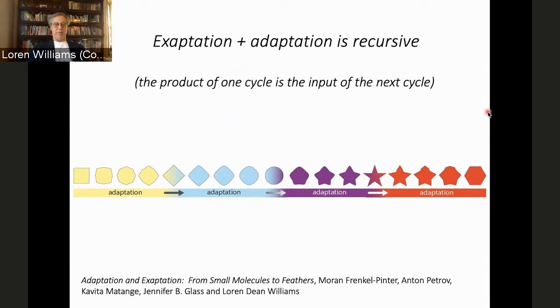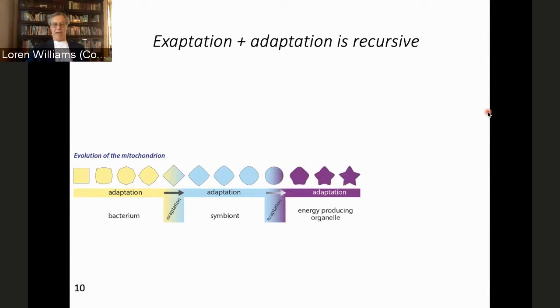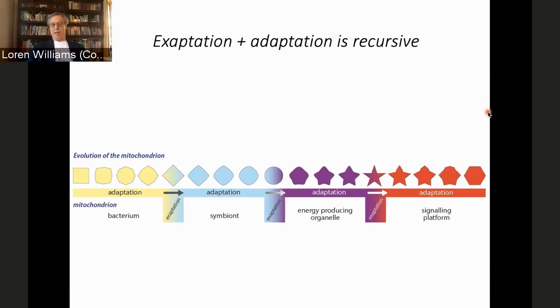If we think about the evolution of the mitochondrion, it has some very, very good examples about exaptive-adaptive recursion. And so we can start with a bacterium. This is an ancestor of the mitochondrion, and that was highly adapted for wherever it was. And that was exapted to become a symbiont. That symbiont was exapted to become an organelle, an energy-producing organelle. That organelle was exapted to become a signaling platform. And if you look at mitochondria in sophisticated eukaryotes, the mitochondrion directs apoptosis and it controls all sorts of signaling in a cell. So you can see this kind of recursion here.